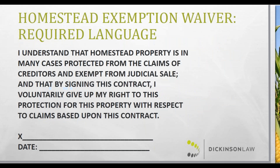You likely have this language in all of your documents — it'll look familiar. It must state verbatim that the party signing understands the homestead property is, in many cases, protected from the claims of creditors and exempt from judicial sale, and that by signing, they voluntarily give up their right to this protection with respect to claims based upon this contract. If you don't have this language verbatim, make sure you get it in there — otherwise you're going to run into homestead issues.